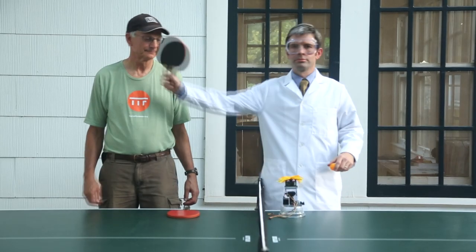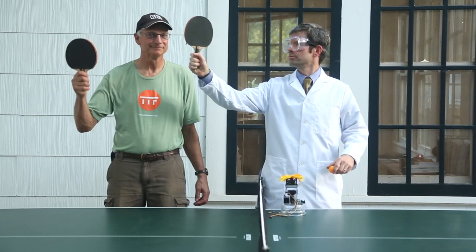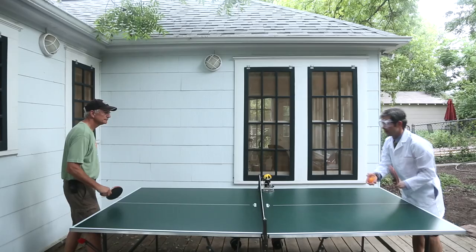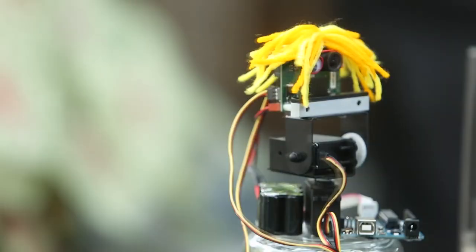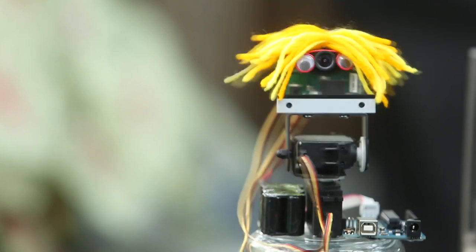Many sensing tasks require speed. Pixie is fast, finding objects and providing updates 50 times per second. Pixie is fast, so your robot can be fast too.